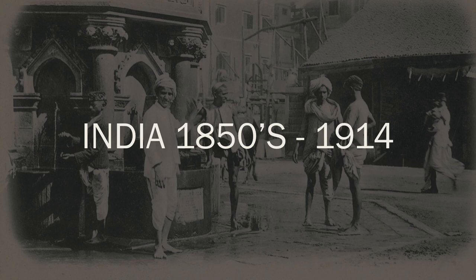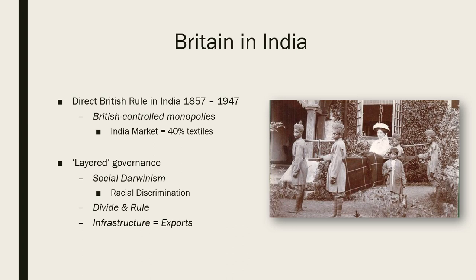Instead, the English Crown took direct control, ostensibly to expand rights and meet the needs of the Indian people, but as we'll see, maybe that wasn't really the case. Between 1857 and 1947 — about 90 years — the British government instituted a series of monopolistic orders, very much against the laissez-faire capitalist ideas dominating English politics for about 40 years.